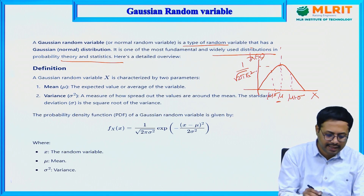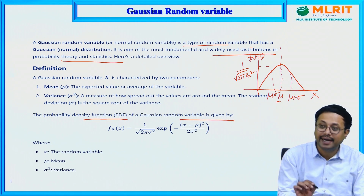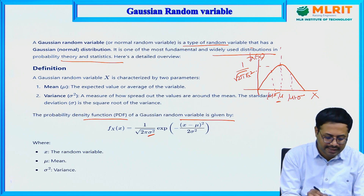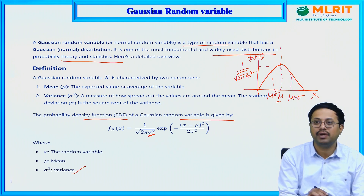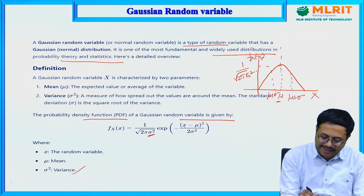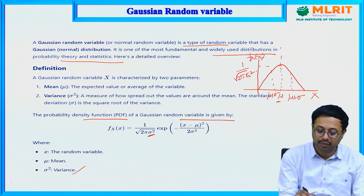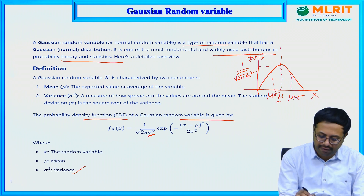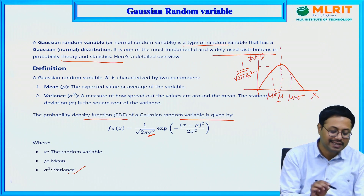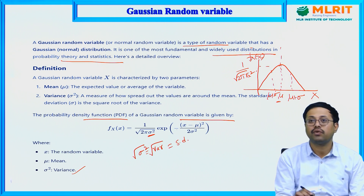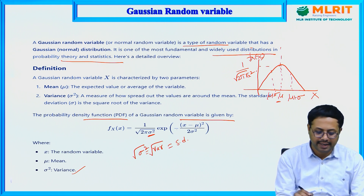The probability density function of a Gaussian random variable is given by 1 over the square root of 2π σ², multiplied by exponential to the power of minus (x − μ)² / (2σ²). Here, σ² represents the variance, μ is the mean or expectation, and σ is the standard deviation, which is the square root of variance.